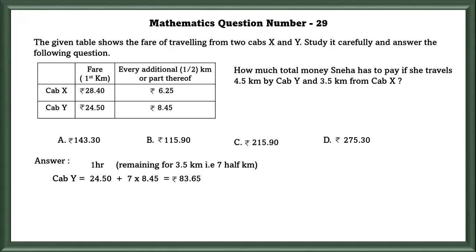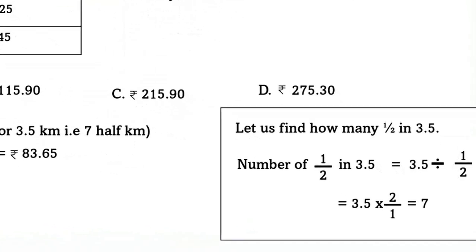For cab Y, for the first kilometer it is 24 rupees 50 paise. For the remaining 3.5 km, that is 7.5 km, 7 into 8.45, which is equal to 83.65. The number of half kilometers in 3.5 is equal to 3.5 divided by 1 by 2, which equals 3.5 into 2 by 1, which equals 7.